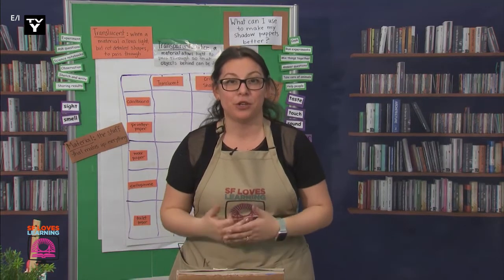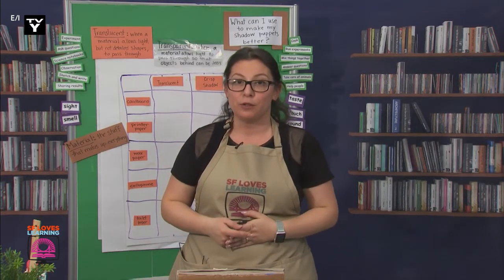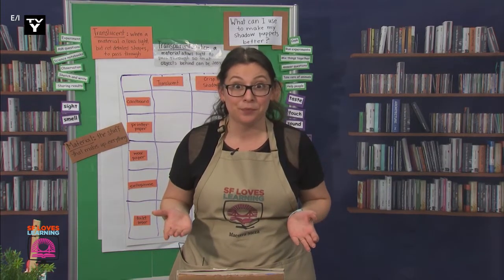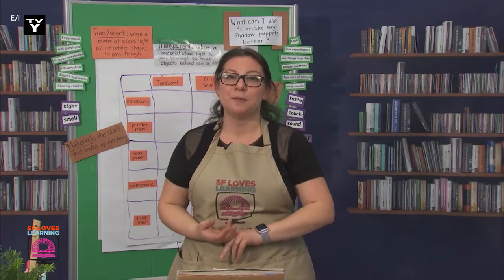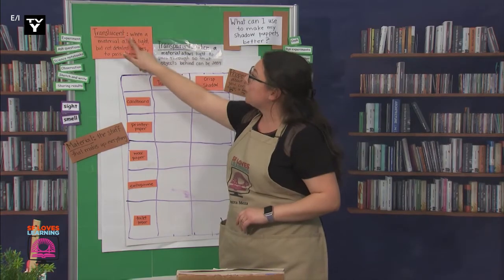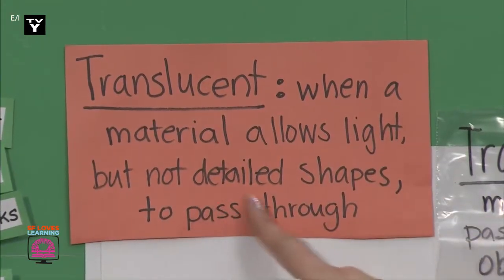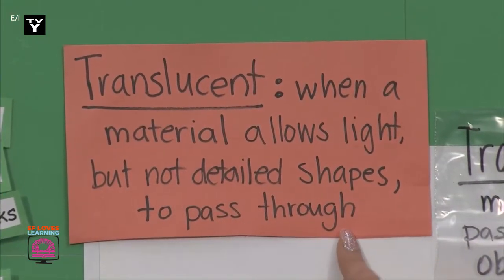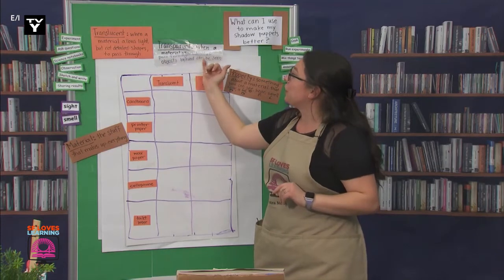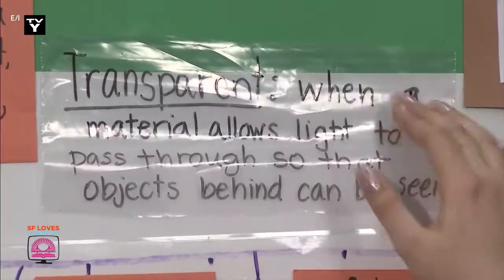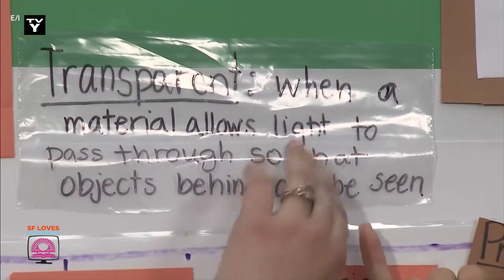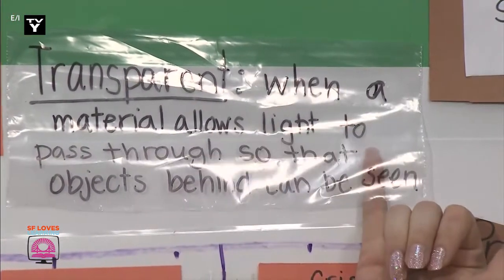Before we test out some of our different materials, I wanted to share some new words with you. These words are properties that we will see today. Let's read the words and see what they mean. Translucent is when a material allows light, but not detailed shapes, to pass through. And transparent is when a material allows light to pass through so that the objects behind can be seen.